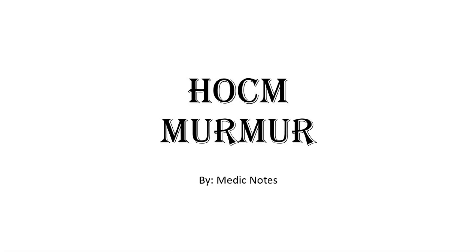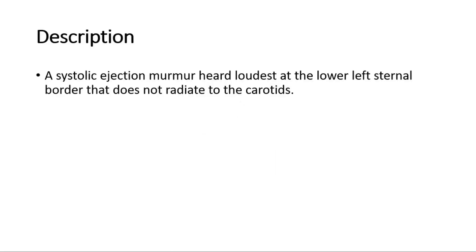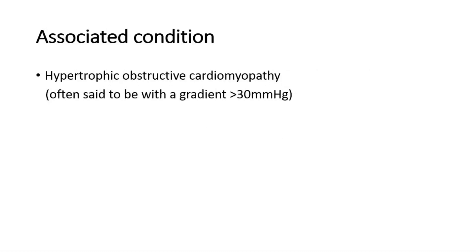Hi and welcome back to another video of Medic Notes. This video is on HOCM, hypertrophic obstructive cardiomyopathy murmur. The murmur is a systolic ejection murmur heard loudest at the lower left sternal border that does not radiate to the carotids. As the name suggests, it is associated with hypertrophic obstructive cardiomyopathy, often said to be with a gradient more than 30 millimeters of mercury.